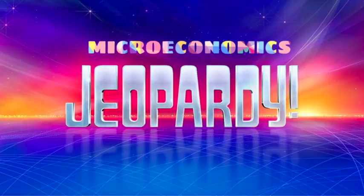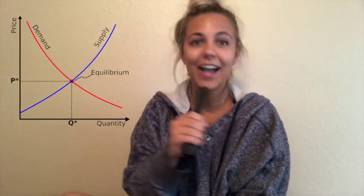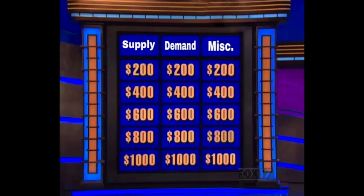Hi everyone, I'm Jacqueline Orenger and I'm your host for today's round of Microeconomics Jeopardy. Today's theme is supply and demand. Here are your contestants: I'm Steph, I'm a Zeta here at FGCU. My name is Christian, I'm on the FGCU basketball team. Here are the categories for you: supply, followed by demand, and lastly miscellaneous.